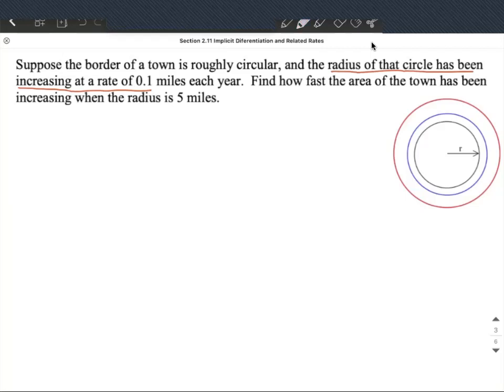Our goal is to figure out how fast the area of this town has been increasing when the radius is 5 miles. So we want to connect together somehow the area of the town and its radius. And this is a circle, as they point out.